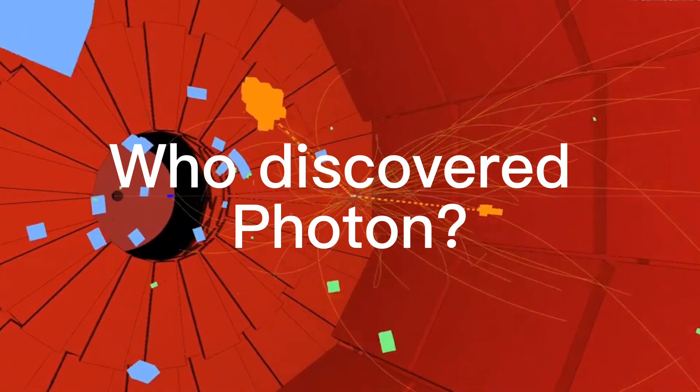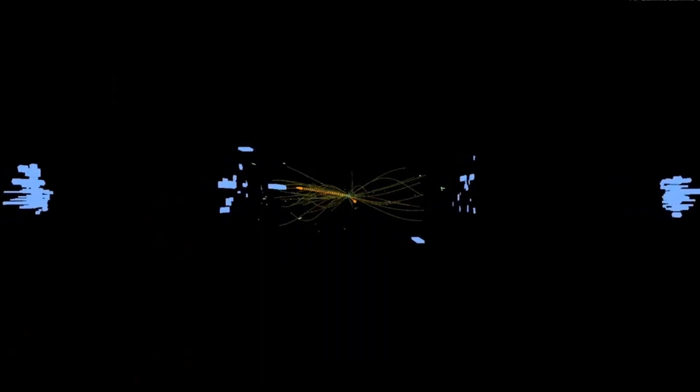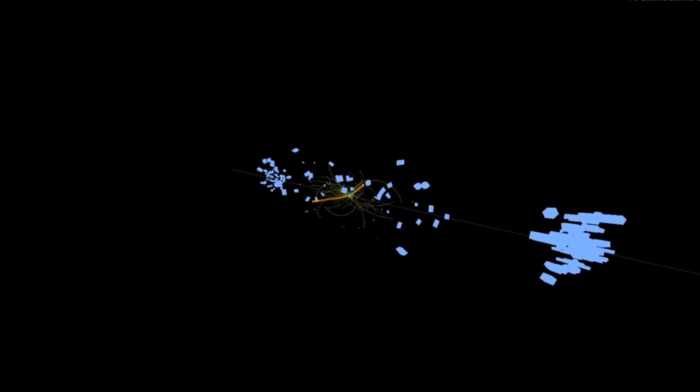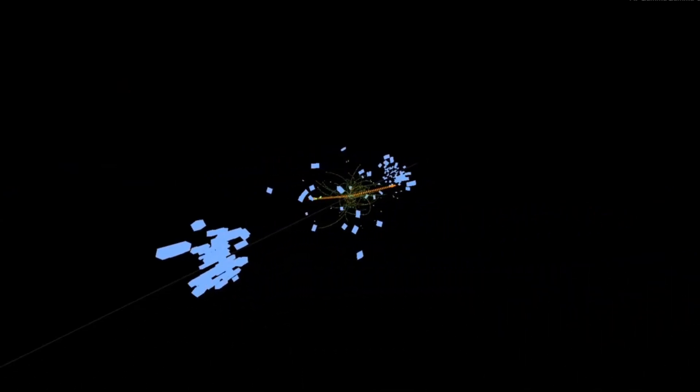Who discovered photon? The first studies on photons date back to the 17th century, when Isaac Newton argued that light was made up of particles. During those times, the particle-wave duality was not clear at all.